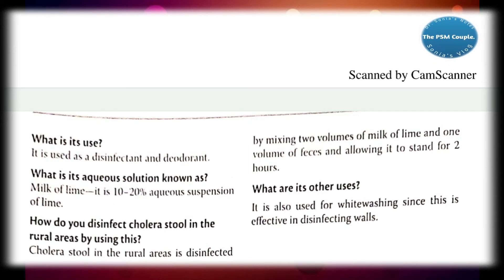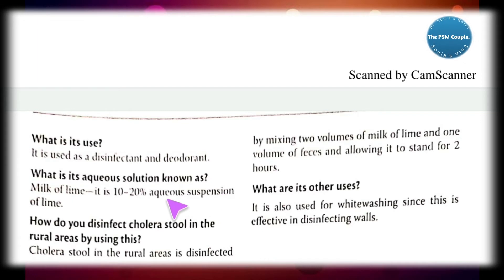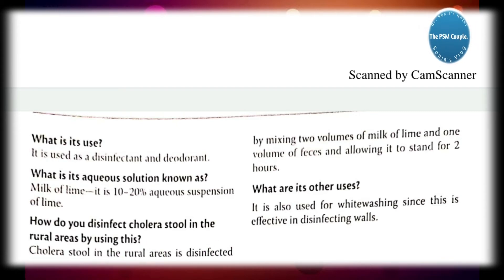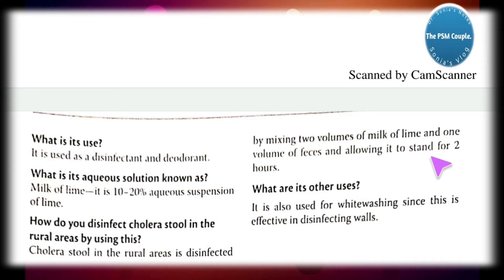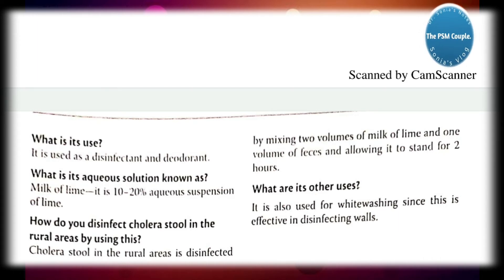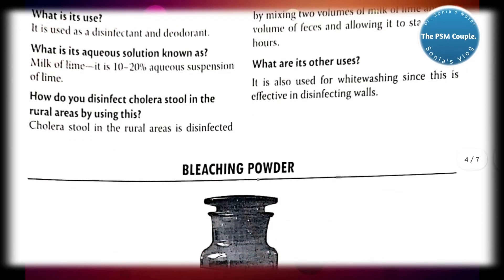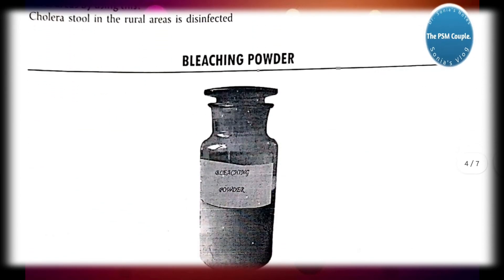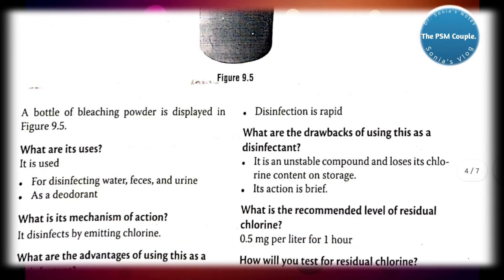Next is lime or slaked lime. What is its use? It is used as a disinfectant and deodorant. Its aqueous solution is known as milk of lime — a 10% to 20% aqueous suspension of lime. How do you disinfect cholera stool in the rural area using it? Mix two volumes of milk of lime with one volume of feces and allow it to stand for two hours. It is also used for whitewash because it disinfects walls.